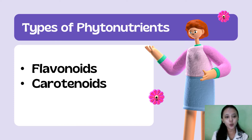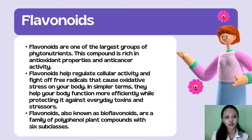We are going to discuss only two types of phytonutrients — flavonoids and carotenoids. Flavonoids are one of the largest groups of phytonutrients. This compound is rich in antioxidant properties and anti-cancer activity. Flavonoids help to regulate cellular activity and fight free radicals that cause oxidative stress on your body. In simpler terms, they may help your body function more efficiently while protecting it against everyday toxins and stressors. Flavonoids are also powerful antioxidant agents.